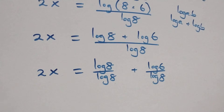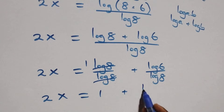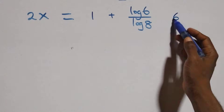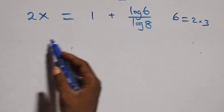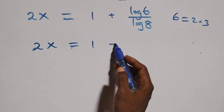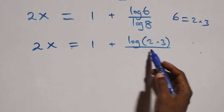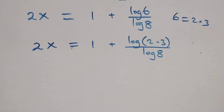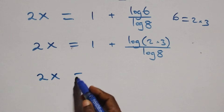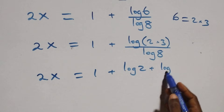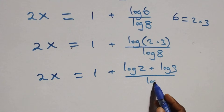Log 8 over log 8 cancels, leaving one. So 2x equals 1 plus log 6 over log 8. Next, 6 can be written as 2 times 3. Then we have 2x equals 1 plus log of 2 times 3, over log 8. Applying the product rule again: 2x equals 1 plus log 2 plus log 3, over log 8.